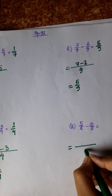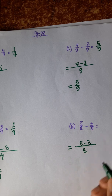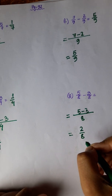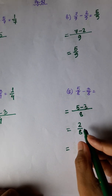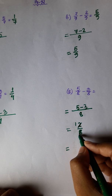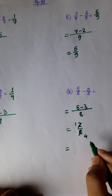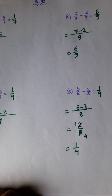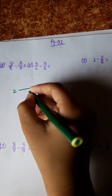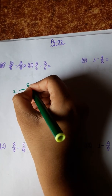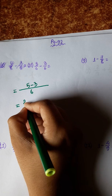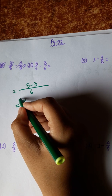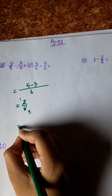Next problem: denominator 8. 5 minus 3 equals 2, so 2 by 8. Dividing by 2: 2 divided by 2 equals 1, and the answer is 1 by 3.